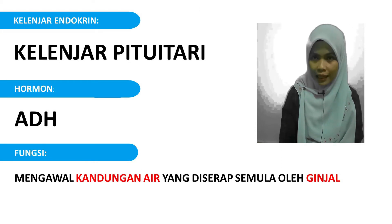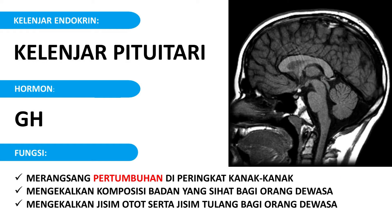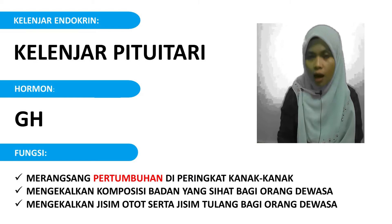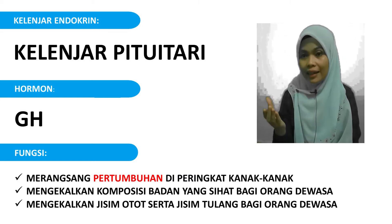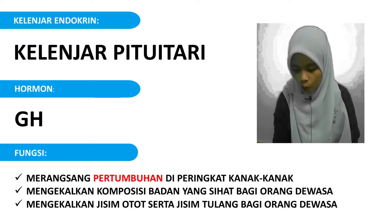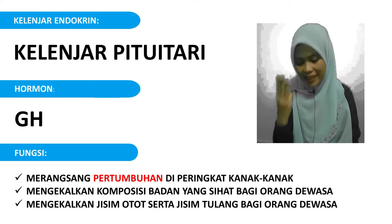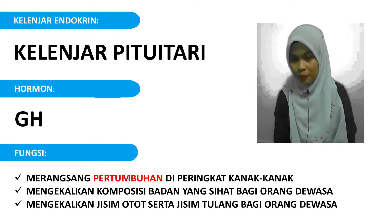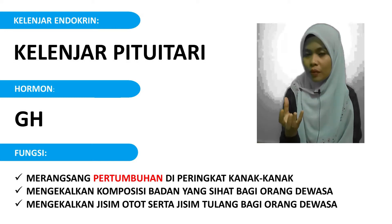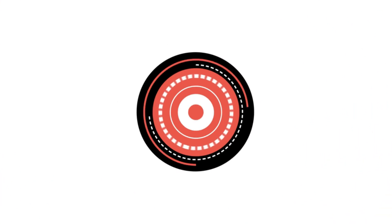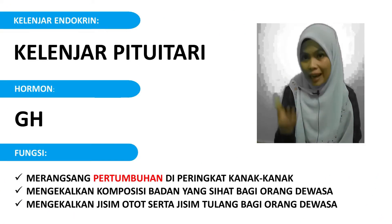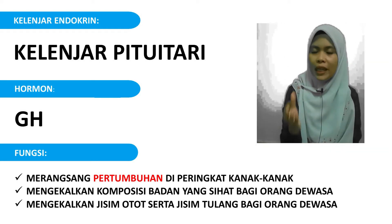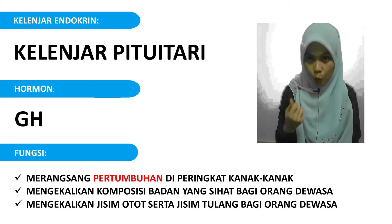Hormon kedua yang dihasilkan adalah GH. G itu stand for growth - hormon pertumbuhan. Fungsi dia adalah merangsang pertumbuhan di peringkat kanak-kanak. Yang kedua, mengekalkan komposisi badan yang sihat bagi orang dewasa. Dan yang ketiga, mengekalkan jisim otot serta jisim tulang bagi orang dewasa. ADH tadi berkaitan dengan kandungan air di ginjal. Growth Hormone atau GH pula berkaitan dengan pertumbuhan.